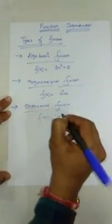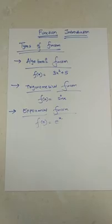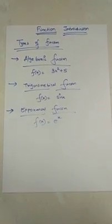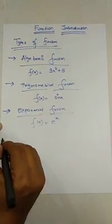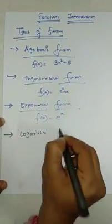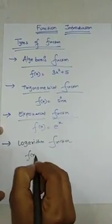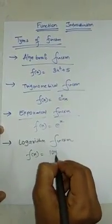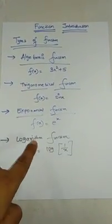So if I write f(x) = e^x, so f(x) = e^x indicates that it is nothing but exponential type function. Now next thing is logarithm function. So if I write f(x) = log(1/x), so it is in the form of log, then we can call it as a logarithm function.